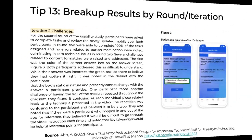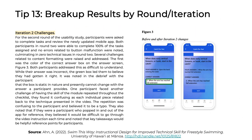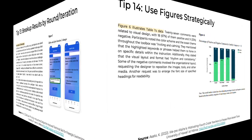Tip 13: If your usability test involved multiple rounds or iterations, it's important to break up those results using subheadings. This can signal to your reader that you're talking about a specific round or iteration of your testing. This is only needed if you had multiple rounds of testing. If you collected all of your data from participants in one round and analyzed all of that data at once, then you don't need to include these subheadings.